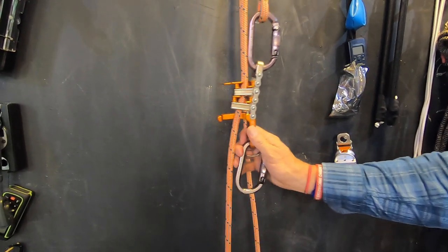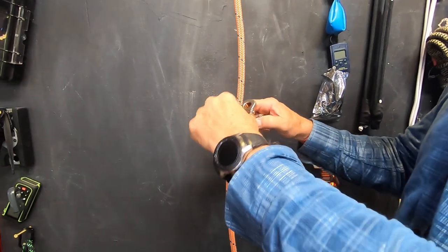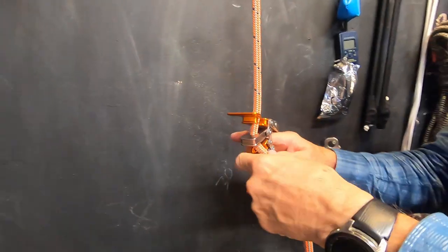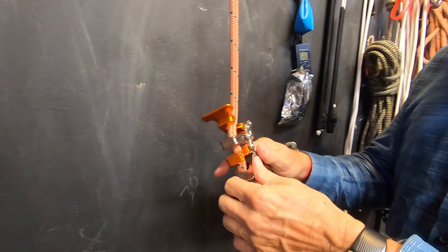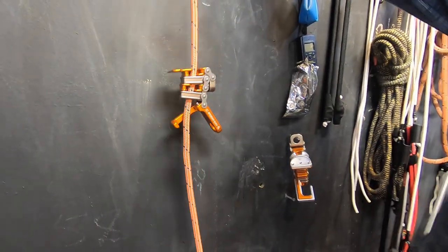So if you go up double rope and then you come down double rope and you do that a lot, you're probably going to wear that out prematurely. And to me that's not where the unicender really shines, it shines on SRT.